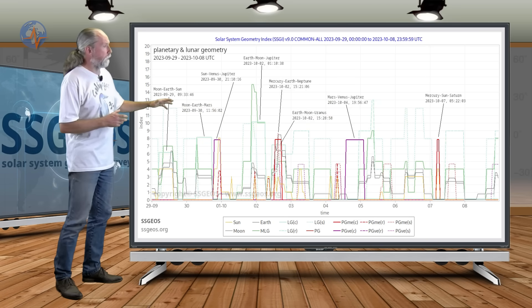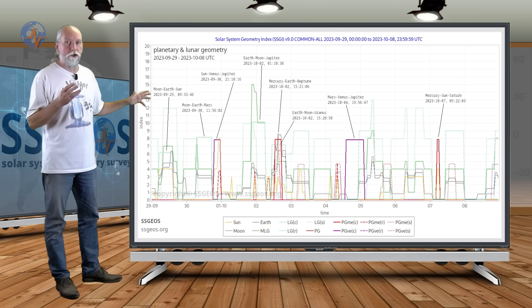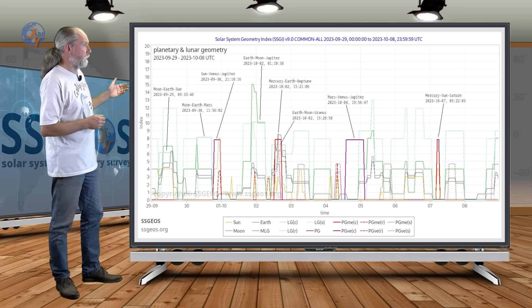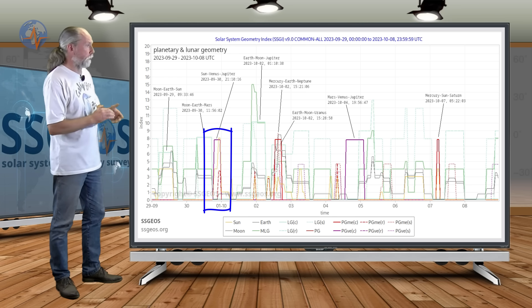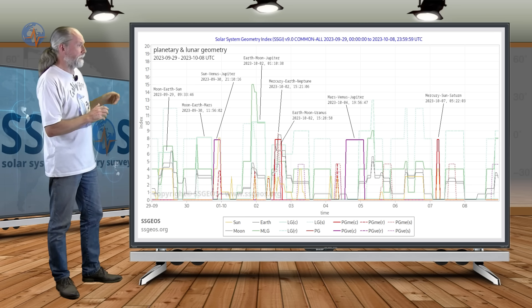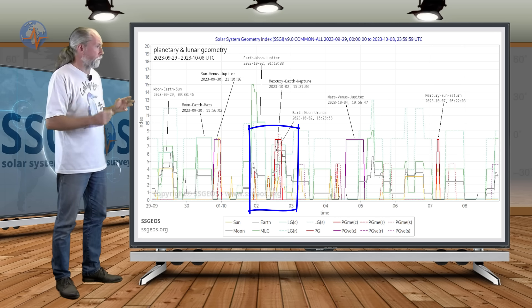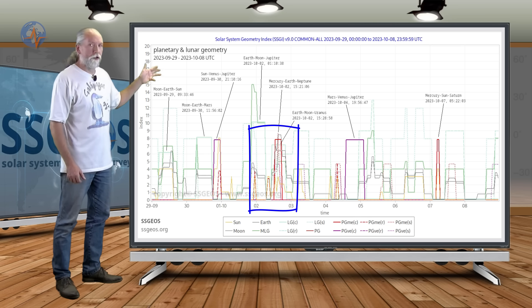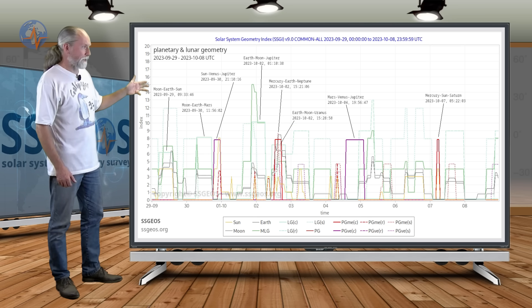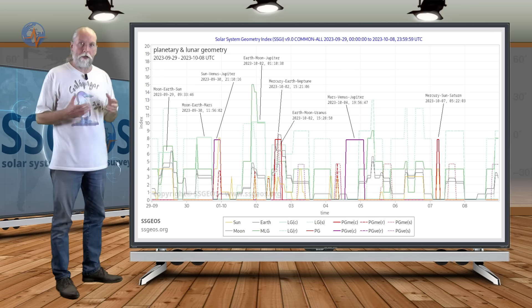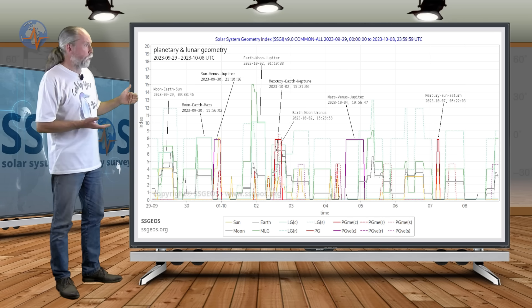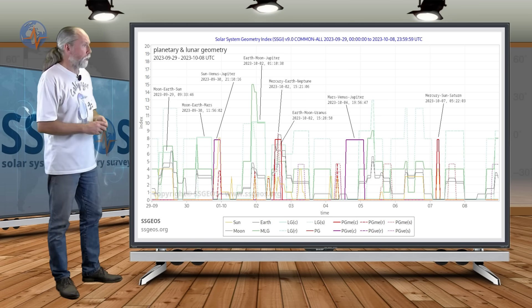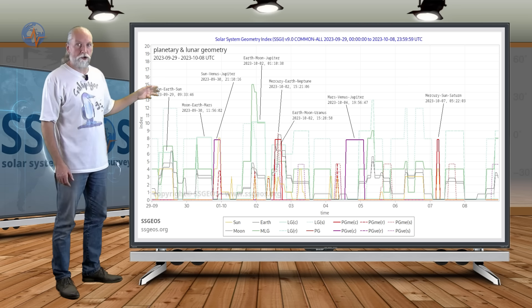As you can see on this SGI graph, we have four planetary conjunctions, and again they are spread out over the week. So we have Sun-Venus-Jupiter tomorrow, later tomorrow, and then on the 2nd of October, and there we see a clustering of critical planetary geometry. And there, right in the middle, we have Mercury-Earth-Neptune in a conjunction. Like I said, because of the critical geometry that we have in the coming days, this may culminate towards that planetary conjunction on the 2nd, around the 2nd, 1st, 2nd, 3rd of October, where we could see the larger seismic activity.